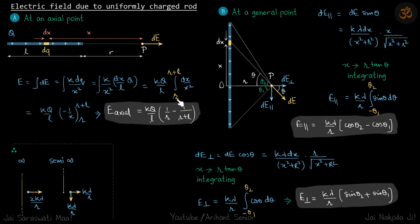So we'll just integrate it. Limits will be from R to R plus L. So we are going left, so we have considered left as positive x. That's why we are putting the limits as R to R plus L. So this should be minus 1 by x and if you put the limits, you will get your answer. E axial is kQ by L, 1 by R minus 1 upon R plus L.